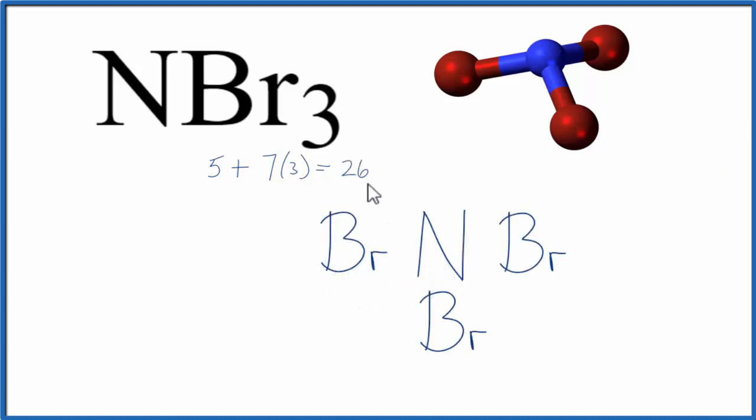So we have a total of 26 valence electrons. We'll start by putting electrons between the atoms to form the chemical bonds. So we've used 6 valence electrons at this point, now we'll complete the octets on the outer atoms.